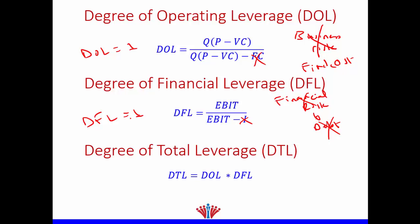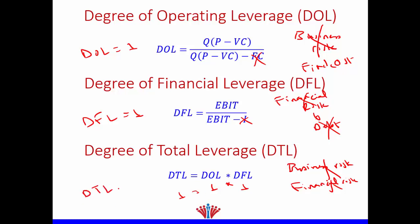Consequently, there is no debt. Lastly, what will happen if we don't have business risk and we don't have financial risk? Therefore, our total risk will be 1, which is the degree of total leverage. So here, if the degree of operating leverage is 1 and degree of financial leverage is 1, then 1 times 1 is equal to 1. So if the degree of total leverage is equal to 1, it means that we don't have neither business or operating risk nor financial risk.